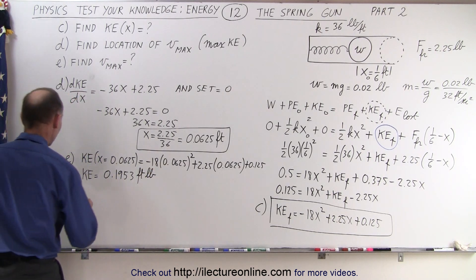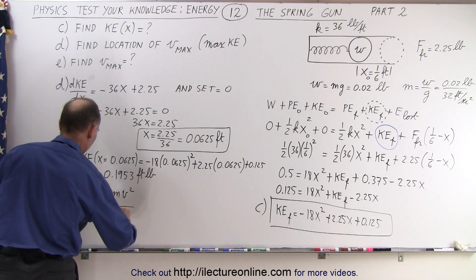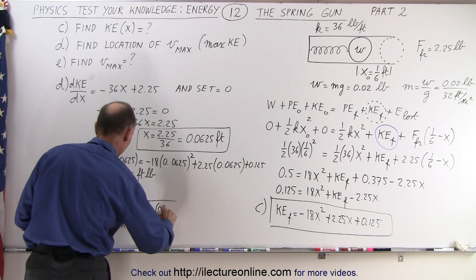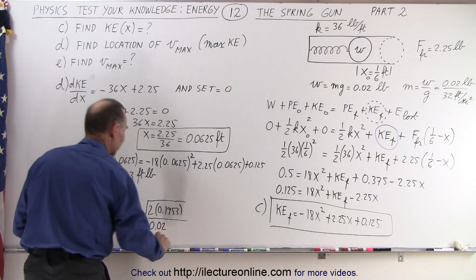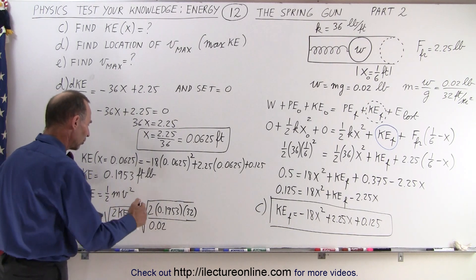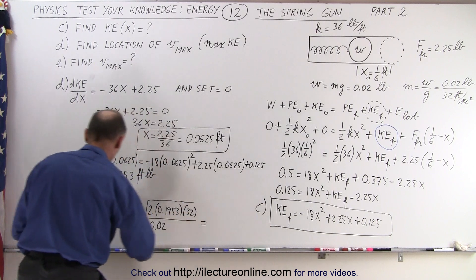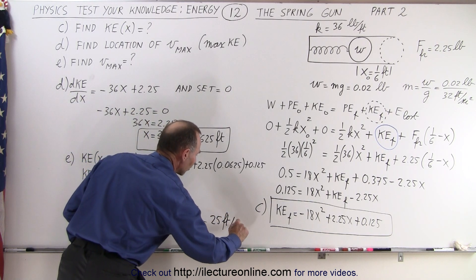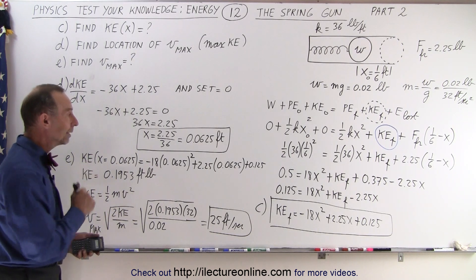Finally, we find the velocity using kinetic energy equals one-half mv squared, so V equals the square root of two times KE divided by mass. That's the square root of 2 times 0.1953 divided by (0.02 divided by 32), which simplifies to 0.1953 times 100 times 32, then taking the square root. The maximum velocity inside the barrel is 25 feet per second. This means the bullet speeds up from 0 to 25 ft/s and then slows back down to 20 ft/s by the time it leaves the barrel.